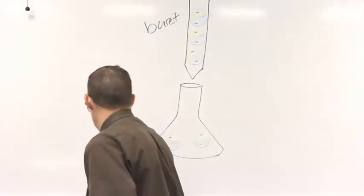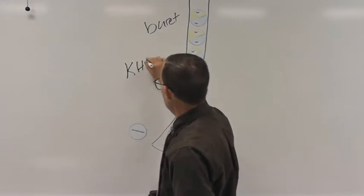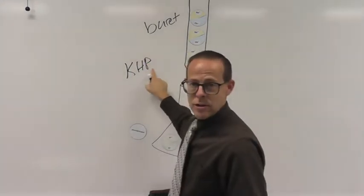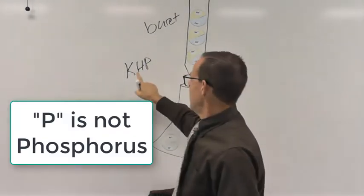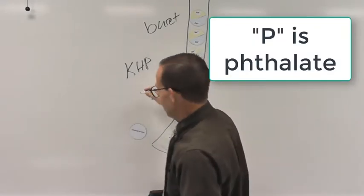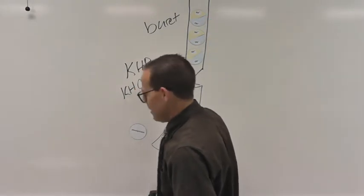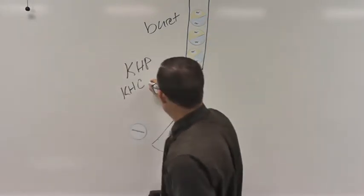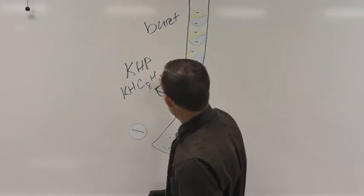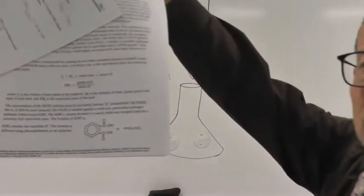Know that KHP is not potassium hydrogen phosphorus. It's potassium hydrogen phthalate, and it has this formula KHC8H4O4. It is in your lab packets. There's a picture of it even, right there.